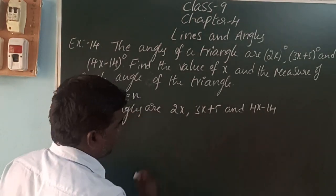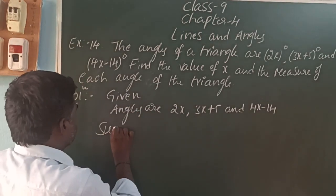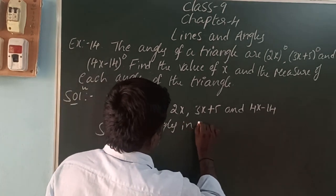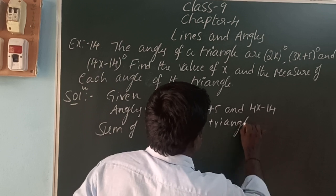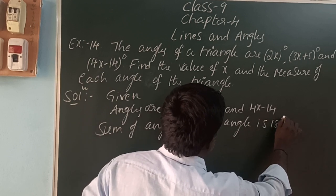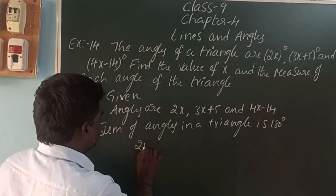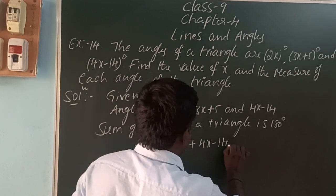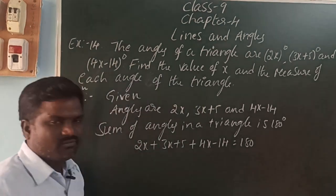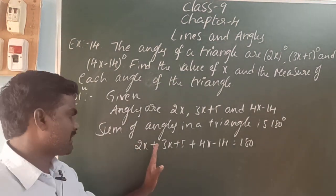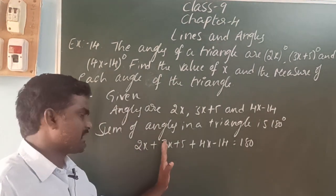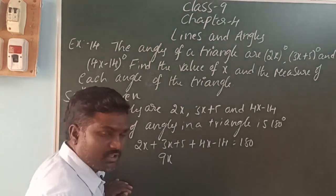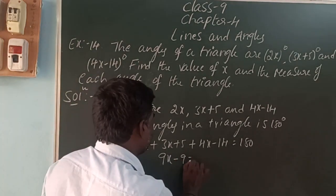These are the angles in a triangle, so the sum of angles in a triangle is 180 degrees. That is, 2x plus 3x plus 5 plus 4x minus 14 is equal to 180. The variable terms are 2x, 3x, 4x. 2x plus 3x is 5x. 5x plus 4x is 9x. Plus 5 minus 14 gives minus 9, so 9x minus 9 is equal to 180.